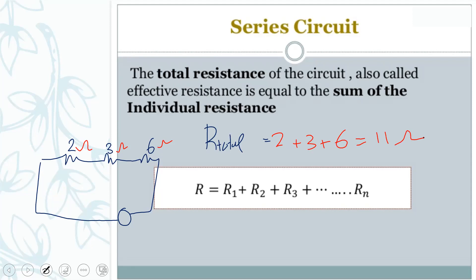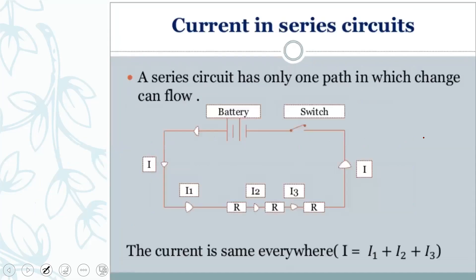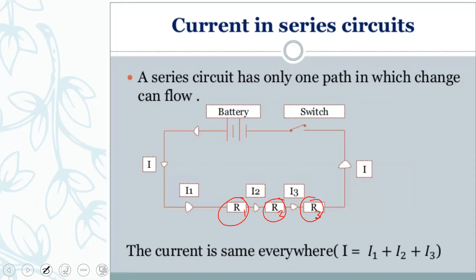Since they are connected in series, you have to add them. Now, looking at a series circuit diagram: here is the battery, here is a switch that we open and close, this is the path of the current, and here we have different resistances — R1, R2, and R3 — connected in sequence, in series, with the battery.